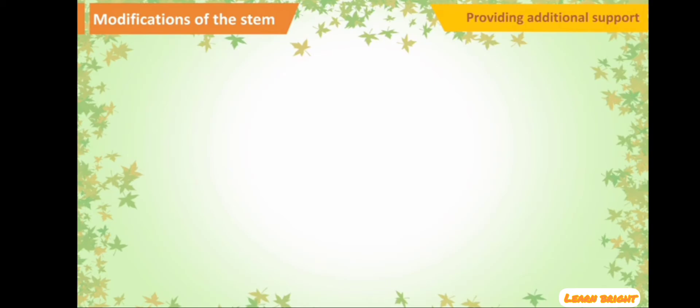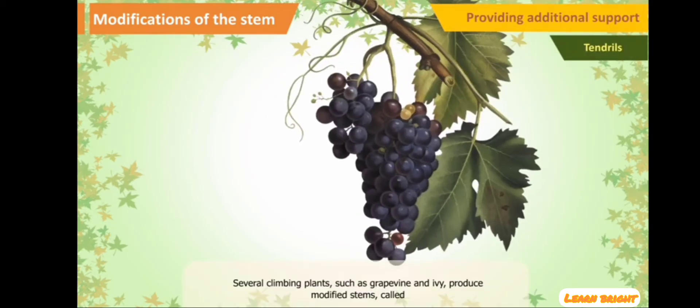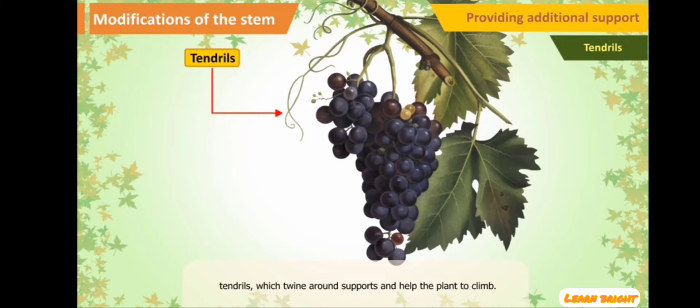Providing additional support: Several climbing plants, such as grapevine and ivy, produce modified stems called tendrils, which twine around supports and help the plant to climb.